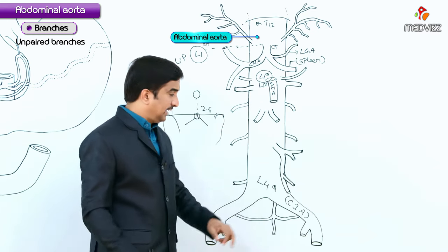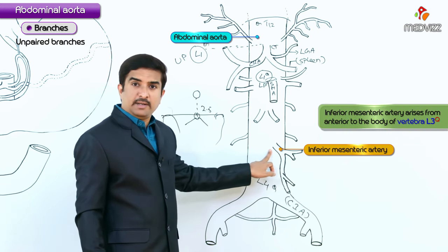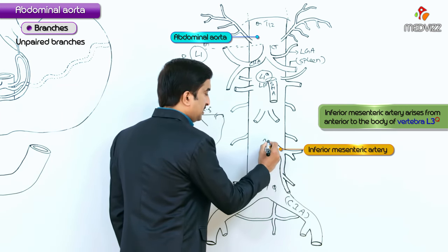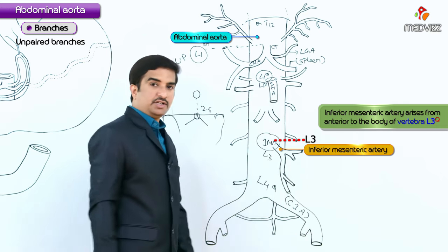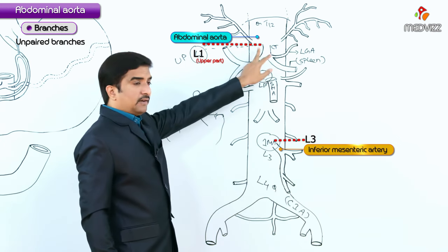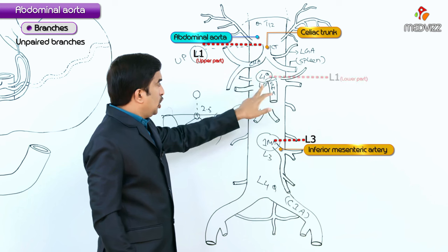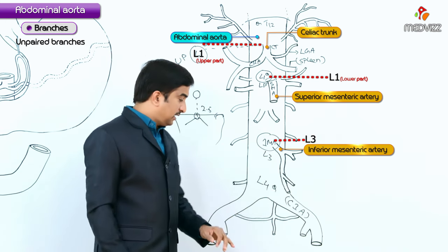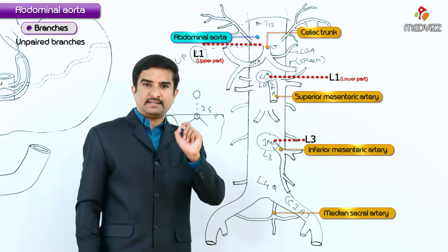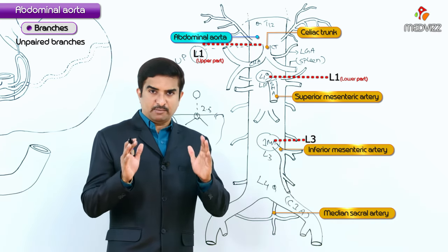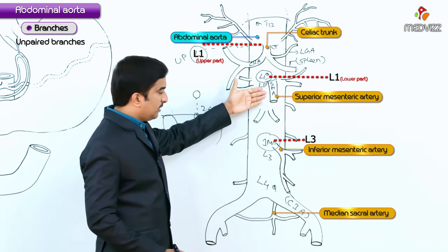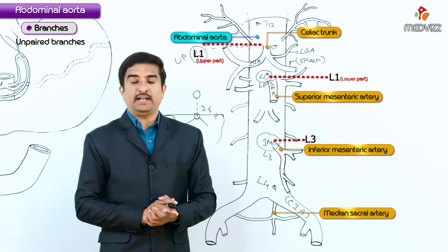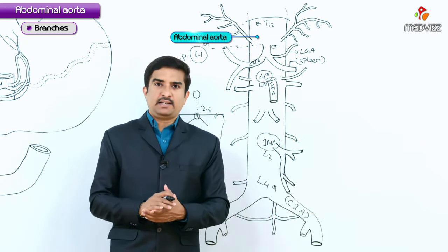Another important unpaired branch arising from the anterior aspect of the abdominal aorta is the inferior mesenteric artery, whose origin is anterior to the body of the L3 vertebra. The fourth unpaired branch is the median sacral artery. So the four unpaired branches are: celiac trunk, superior mesenteric artery, inferior mesenteric artery, and median sacral artery.